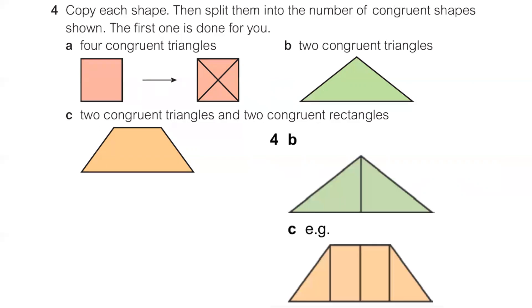Here's what we should have come up with. Both of them initially we split down the middle in order to achieve that congruence. With the green triangle in B, we just needed to split it down the middle and we had our two congruent triangles. With C, once we split it down the middle we have these two trapezium shapes. We can split each trapezium into one rectangle and one triangle. Because we use that symmetry, if we do the same cut on this side as this side, we will end up with the congruent sets.